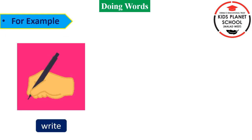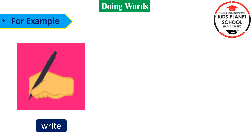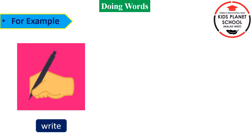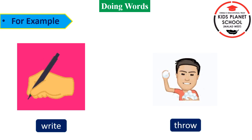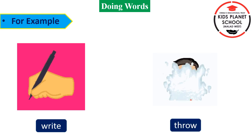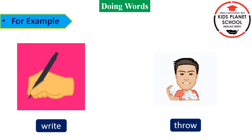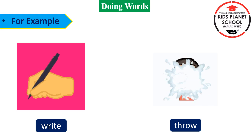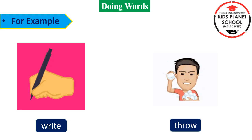Write. Children, when you write, your hand moves. It is an action. So, write is a doing word. Throw. Children, when you throw, your hand moves. It is an action.